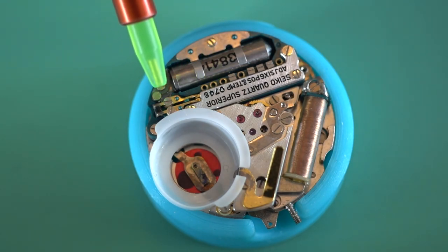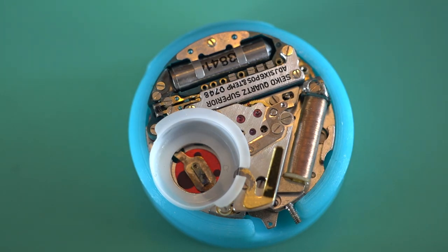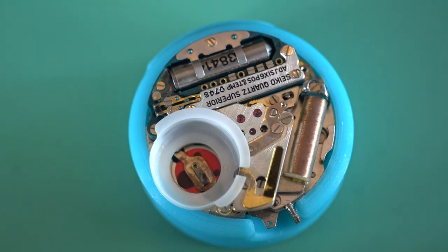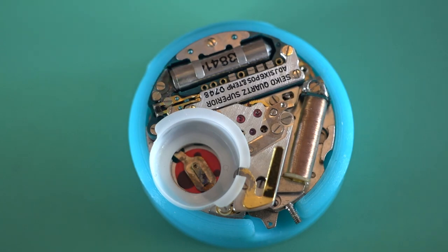As for the temperature compensation, I would say that the trimmer they've put on there, what they've done is just taken or put the movement in an oven or something and just tested it across the temperature variation, and by putting that trimmer on the end there, that just evens it out across lots of variations.